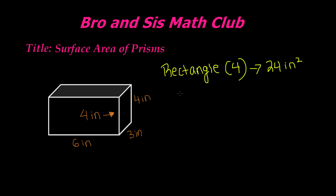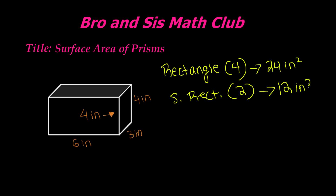Next, this is a smaller rectangle — we'll just write S rectangle for small rectangle — which we have two of those. So we have one over here, and then one on that side. These have a measurement of 4 inches and 3 inches, which is 4 times 3 is 12. That means we have an area of 12 inches squared.